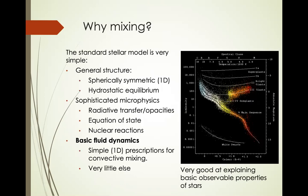You might ask: why do we care about turbulent mixing in stars? The reason is that we don't actually understand stars too well. The standard stellar model is very simple but good at explaining observations. It's a 1D, spherically symmetric model that assumes hydrostatic equilibrium. It has sophisticated microphysics including equations for radiative transfer, opacities, equation of state, and nuclear reactions. But by comparison, the fluid dynamics used are extremely basic — essentially just a mixing length prescription for convective mixing.